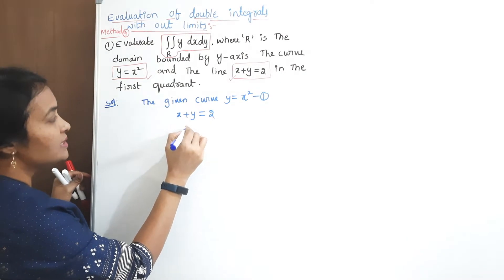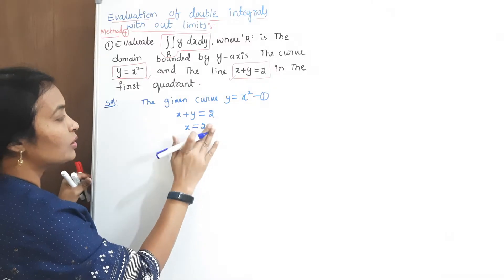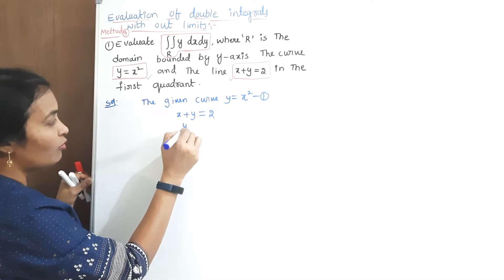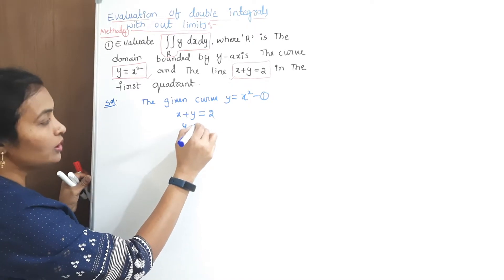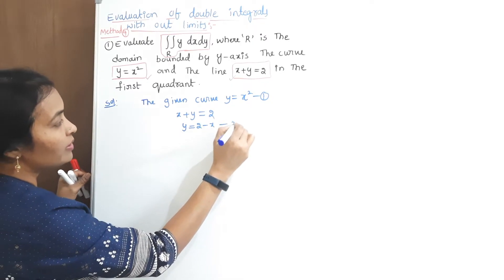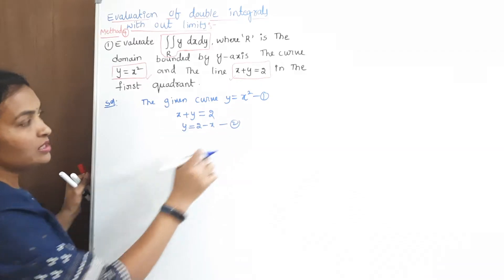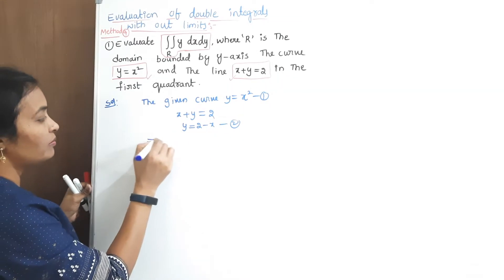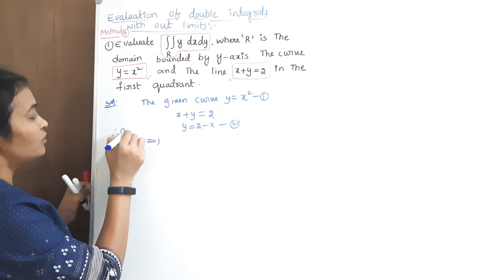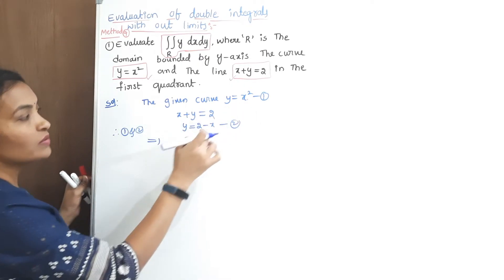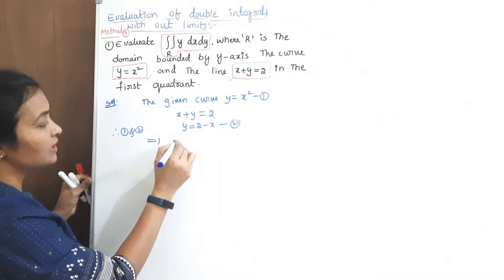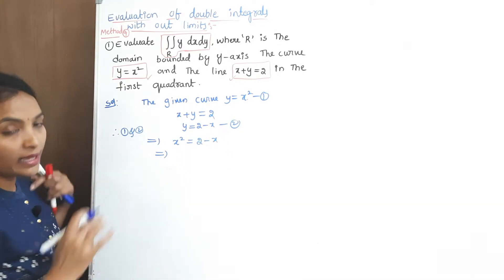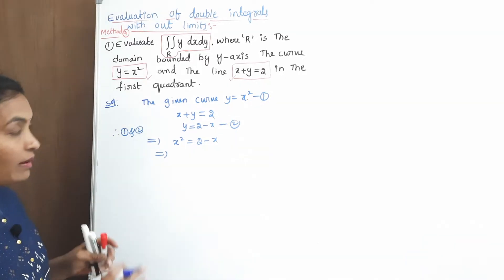We want to write in terms of y because the equations are in terms of y. From x plus y equals 2, y equals 2 minus x. From these two equations, equating them: y equals x squared and y equals 2 minus x. From equations 1 and 2, automatically x squared equals 2 minus x. Solve this equation and we will get the x values.